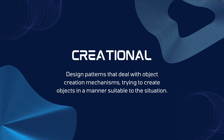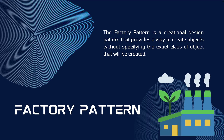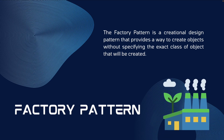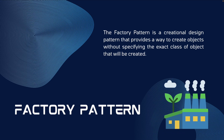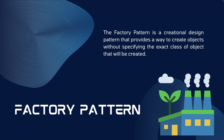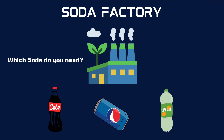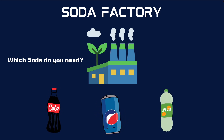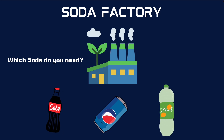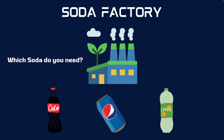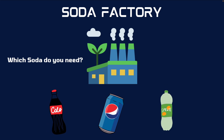The factory pattern is a part of the creational design patterns. These are design patterns that deal with object creation mechanisms, essentially trying to create objects in a manner suitable for the situation. The factory pattern provides a way to create objects without specifying the exact class. Think of it as a factory that produces different types of products based on the input it receives — like a soda factory: if you want a Pepsi, it gives you a Pepsi; if you want a Sprite, it gives you a Sprite. All you have to do is specify it as an input, and if it has it, it'll output it.